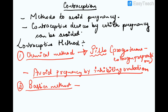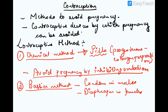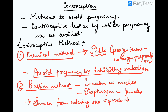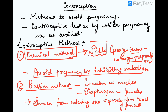The second method is the barrier method, which includes condoms in males and diaphragms in females. In males, the condom prevents semen from entering the reproductive tract of the female.